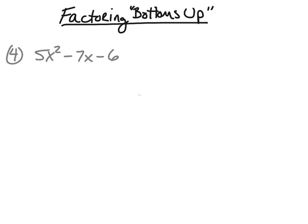Let's take a look at one last example: 5x² − 7x − 6. The first thing we're going to do is rewrite this trinomial as x² − 7x − 30. We're multiplying 5 times negative 6 to get that negative 30. Now we're going to factor this trinomial.